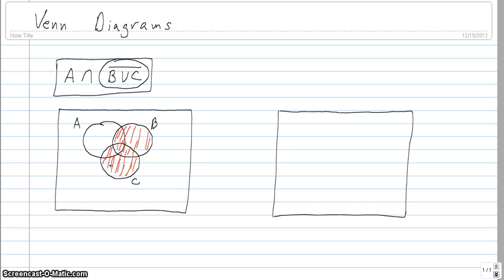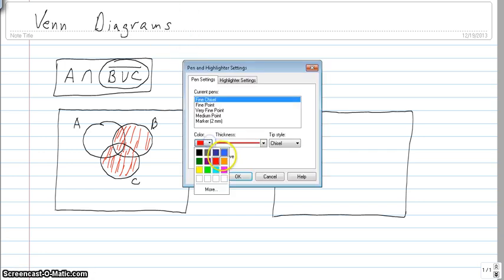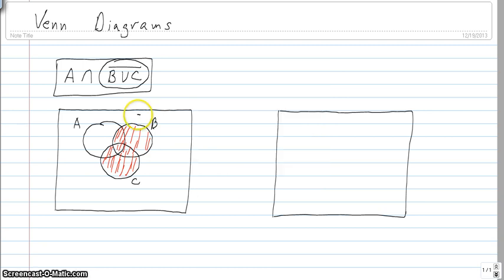And the complement of that would be right as everything in the universe take away the union C. So everything that's left if we were to take away B union C, so in let's see in blue.